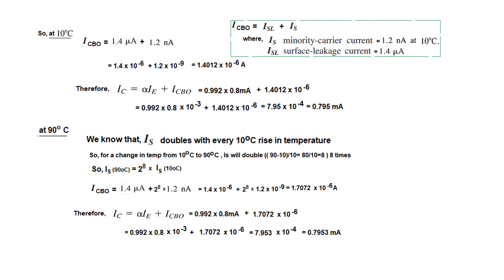I hope this gives you an idea of how to solve this type of problem. Primarily, if you note that because the value of the surface leakage current is much higher than the minority current IS, there is not much significant change in these values from 10° to 90°. Thank you.